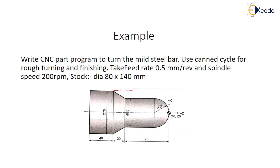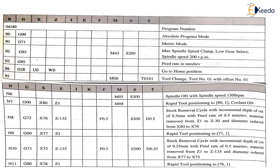So again, there is a part program with some stock material that we are going to remove. The part program is basically divided in table form: N, G, X, Z, I, K, F, M, S, T. N will be sequence number, G will be G-code, X will be the dimension about diameter, Z will be the dimension about length. I and K are secondary dimensions for the arc or for G02/G03. F will be feed rate, M will be machine code, S will be spindle speed.